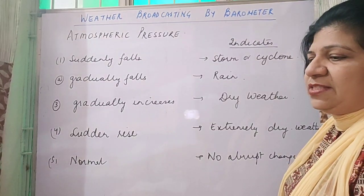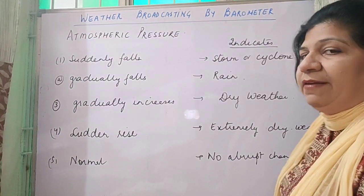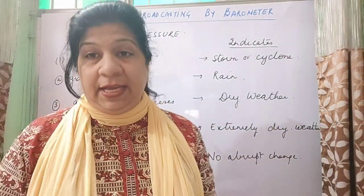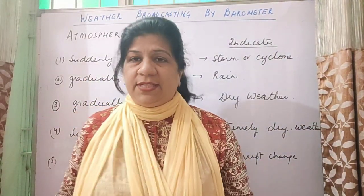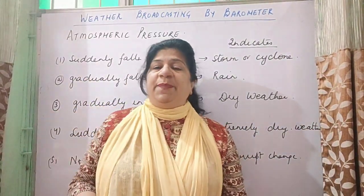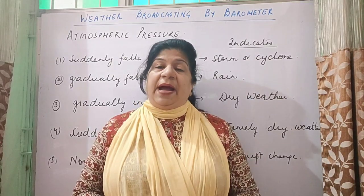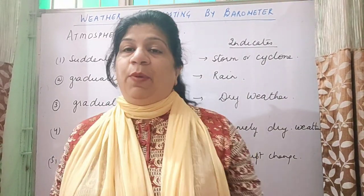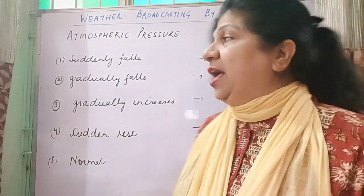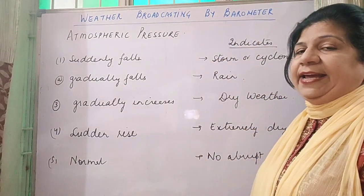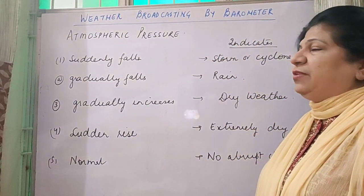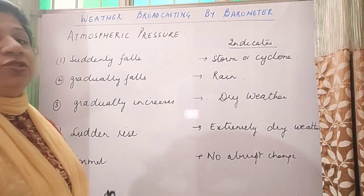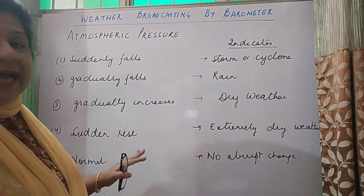And you must have seen this in Google and all — you check it on your birthday if it is raining or not, and whatever. How are these predicted? They are only predicted by studying the change in atmospheric pressure, and this is what it indicates when the atmospheric pressure is changing. So it's good for you to take it down in your copies and learn it.